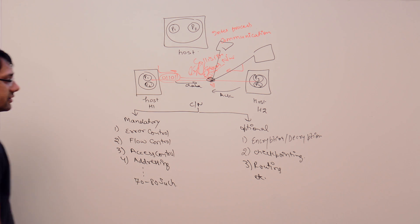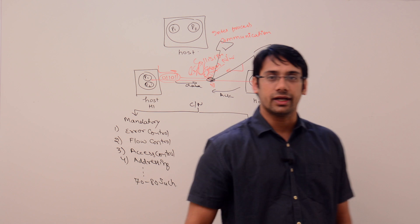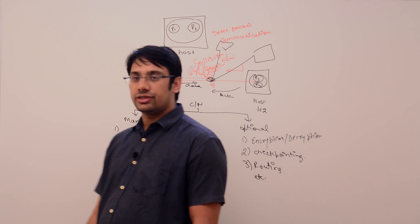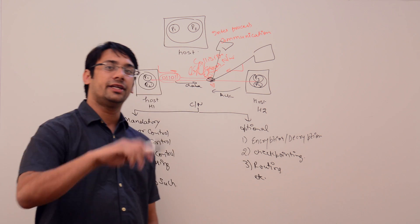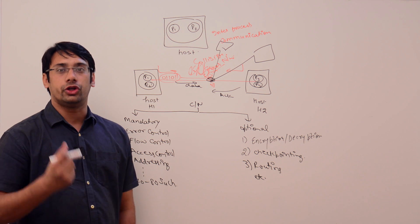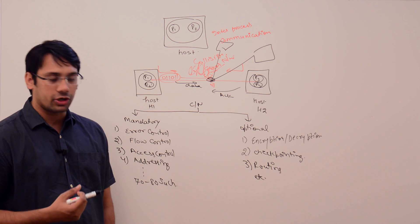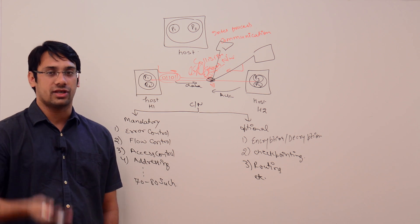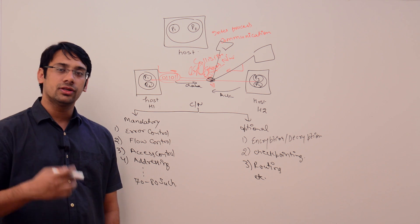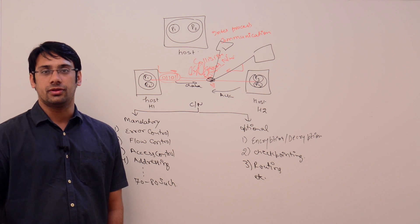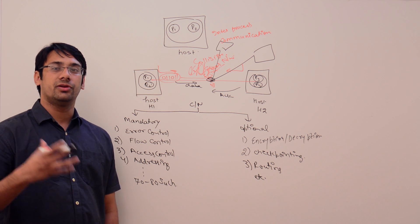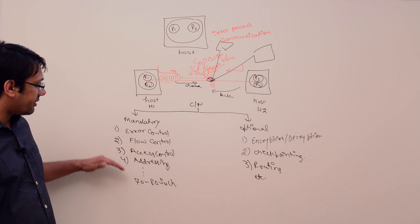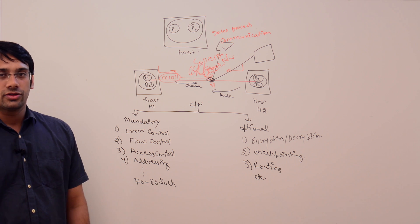What the network designers have done is take all these functionalities and implement them in different modules or layers — a modular fashion is better because in a team it is easier to assign some responsibilities to one team and others to another. So they divided these functionalities into different layers. What are those layers?